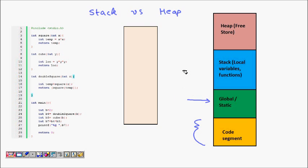Then we have the stack, which is very important. The stack is the memory where all the local variables and functions are stored — when we call functions, the arguments we pass, the values we return, and the local variables inside the function are all stored on this stack memory. Another region is the free store, or heap, where dynamically allocated memory lives.